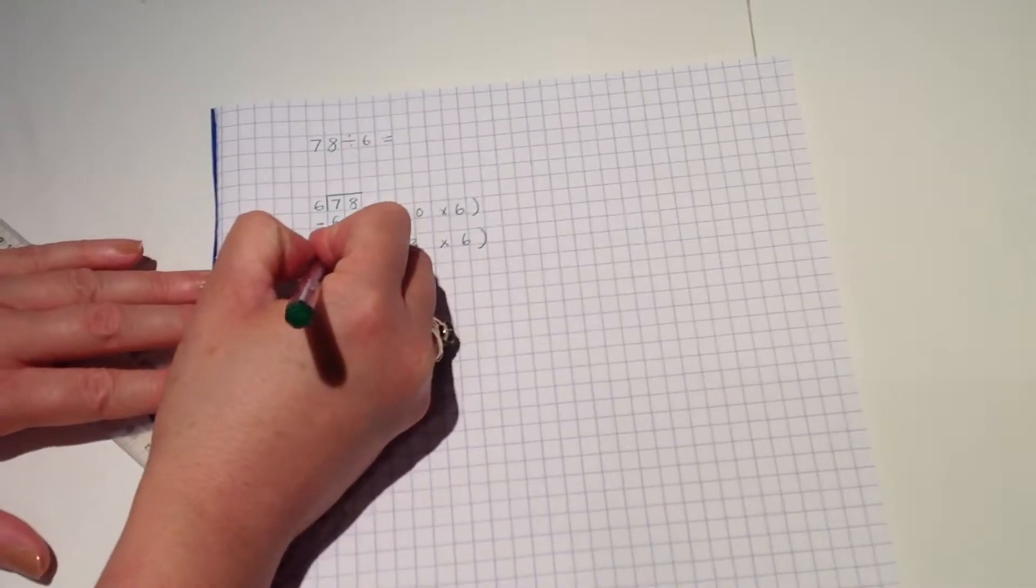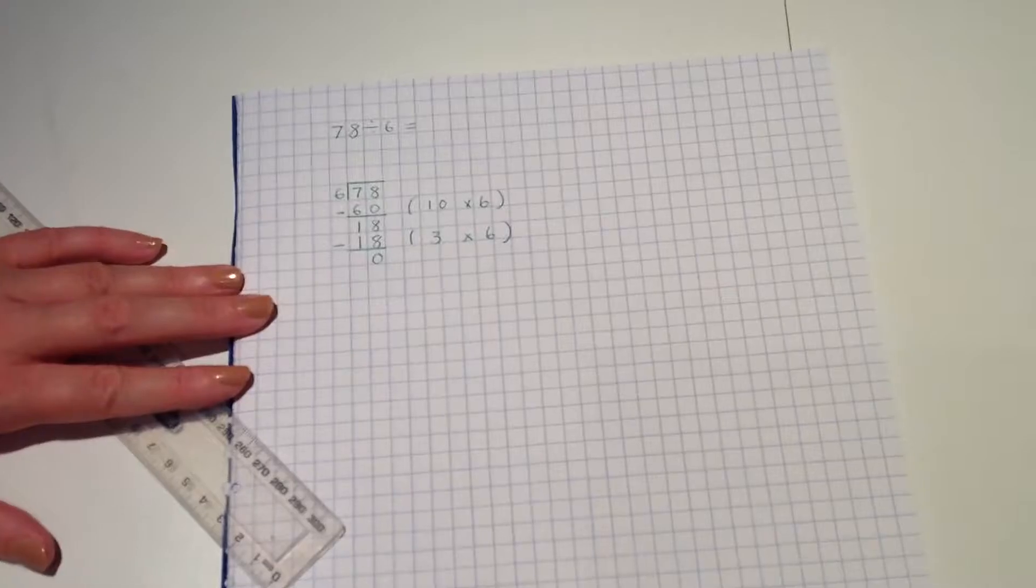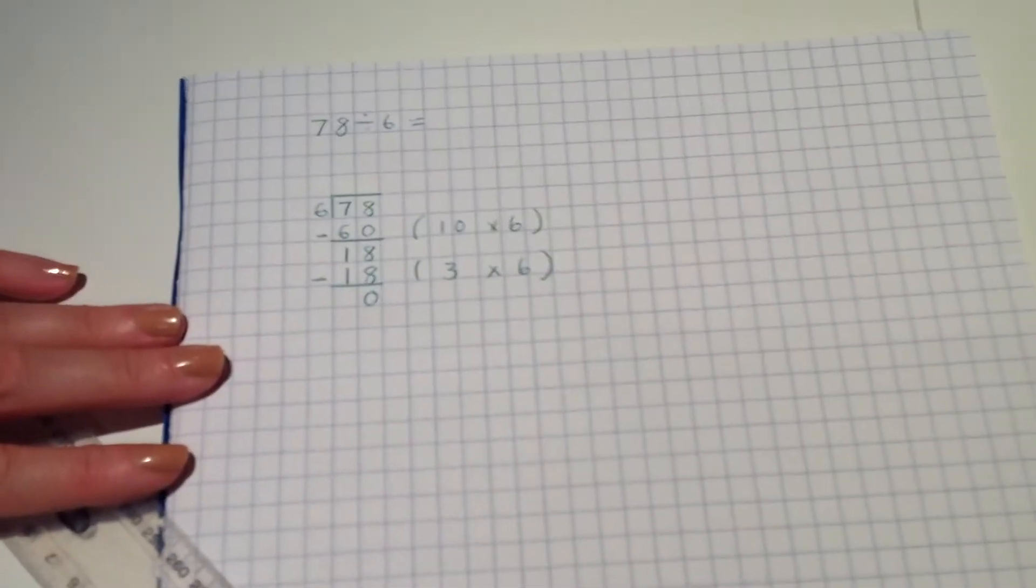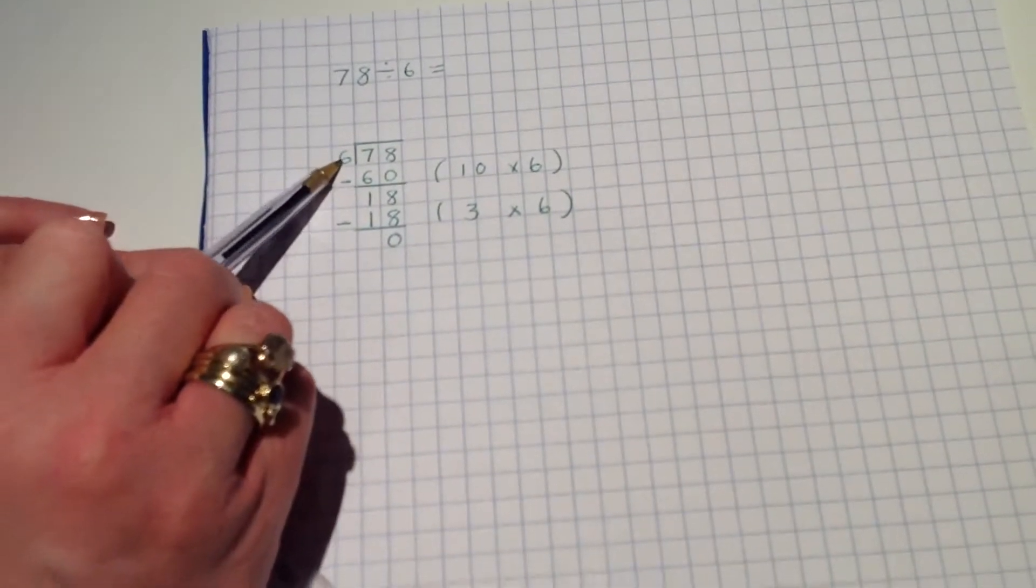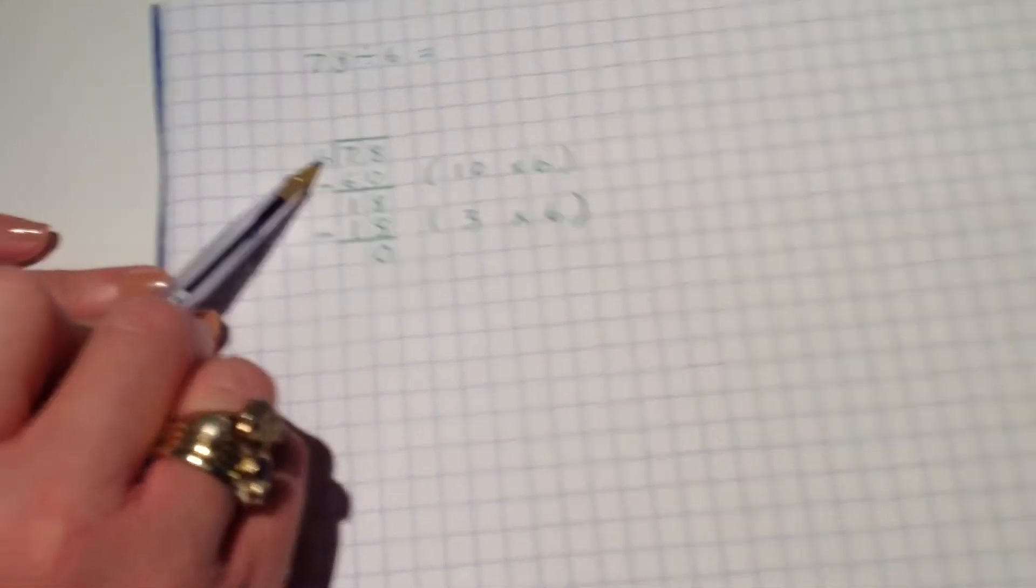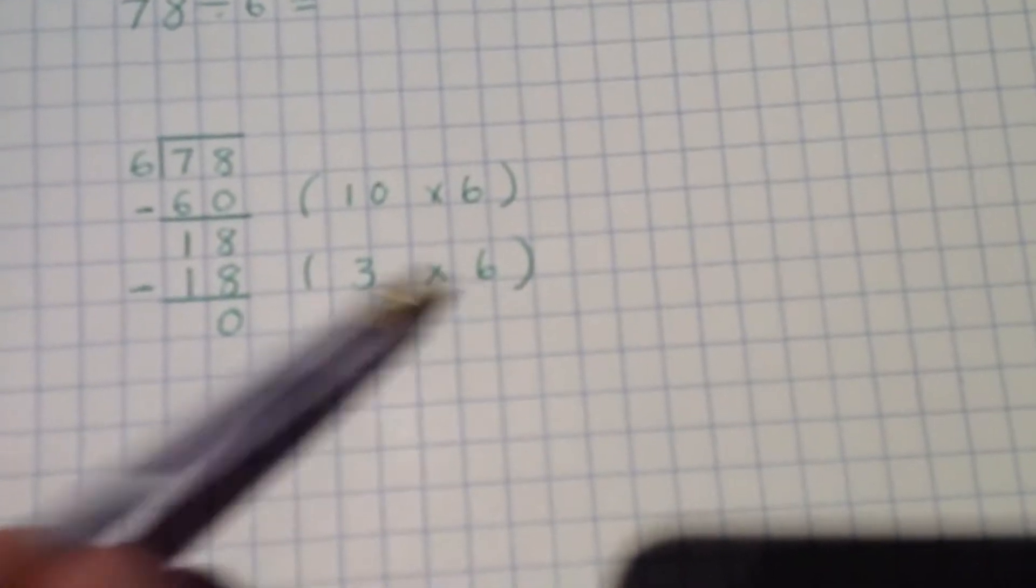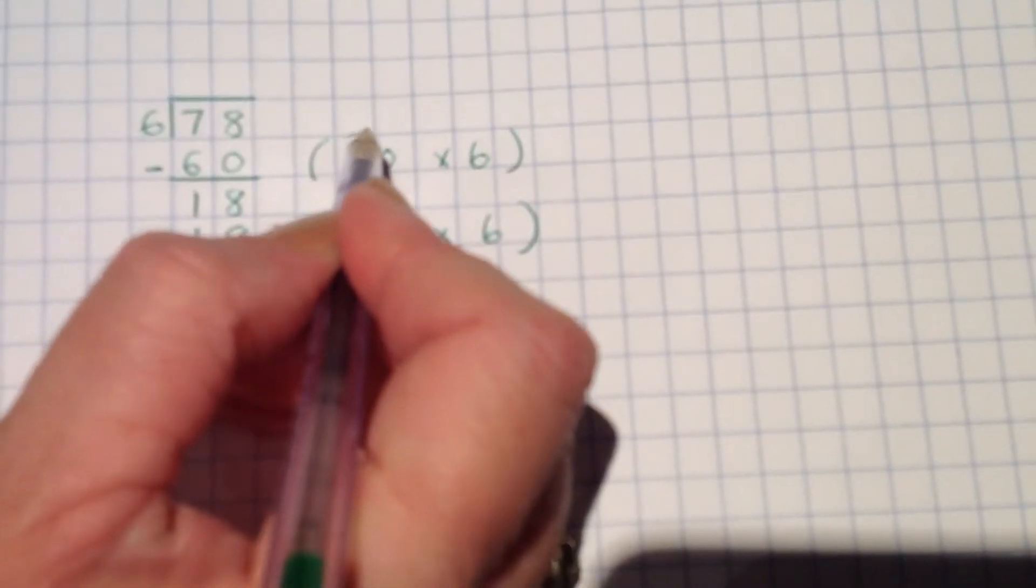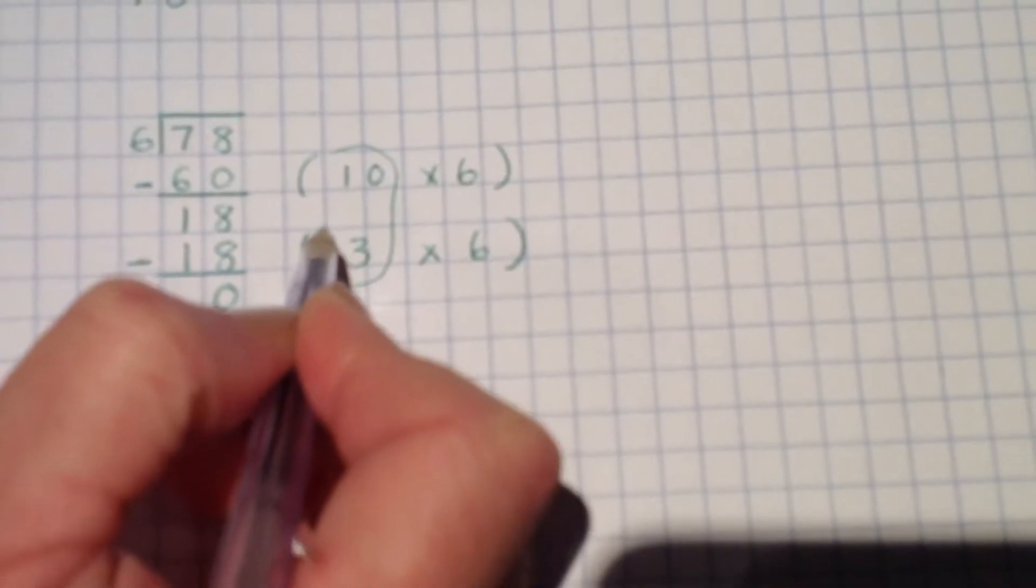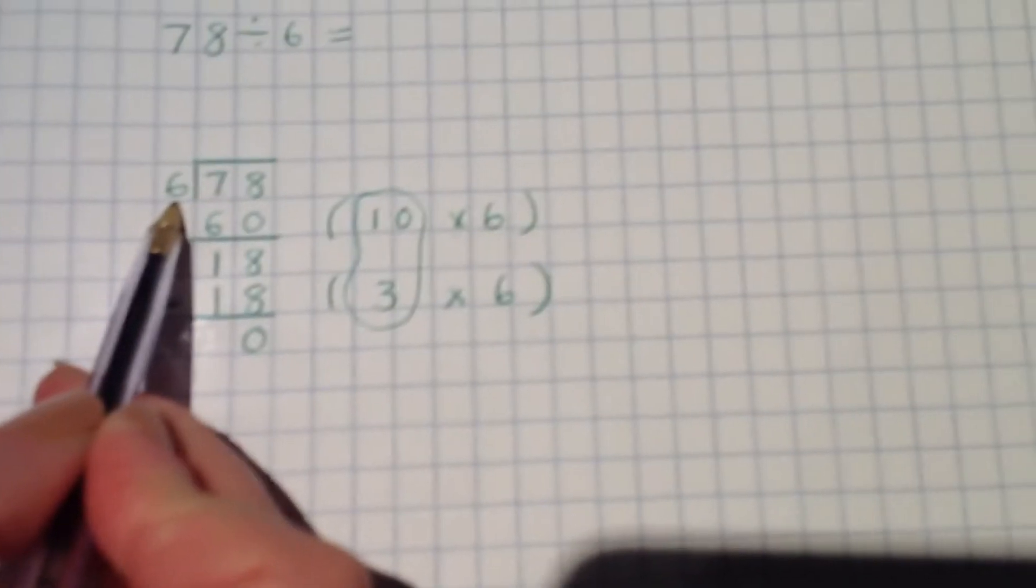That means I've then got 18 left to now divide up into groups of six. Now, using my times table facts, I know that three lots of six make 18. So I'm noting down the 18 again that I'm going to take out and I'm going to notice then that actually 18 take away the 18 leaves me with nothing left. So I have no remainders.